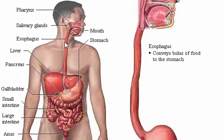The esophagus has no digestive or absorptive functions. It is simply a conduit that conveys food from the pharynx to the stomach. The esophagus passes through the diaphragm at the esophageal hiatus.